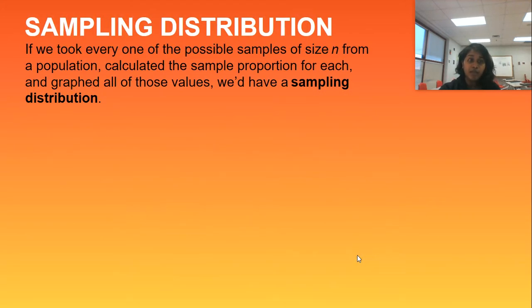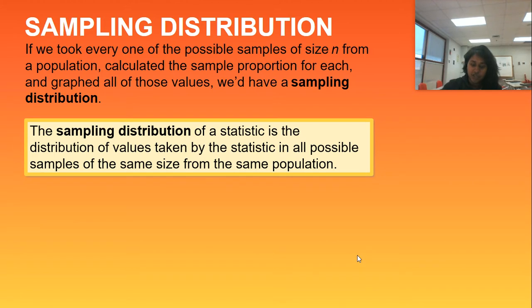So if we took every one of the possible samples of size n from a population, calculated each and every one of their sample proportions, and graphed all those values, we have what's called a sampling distribution. So we get to create one for ourselves in just a moment.